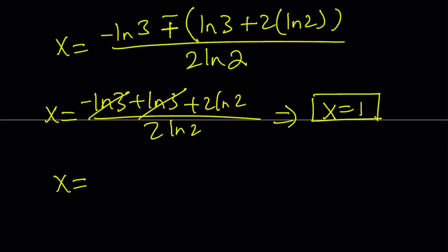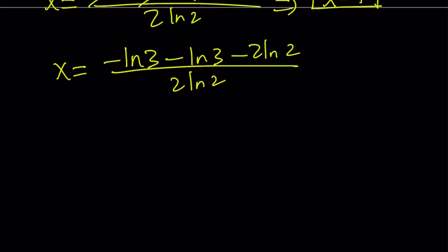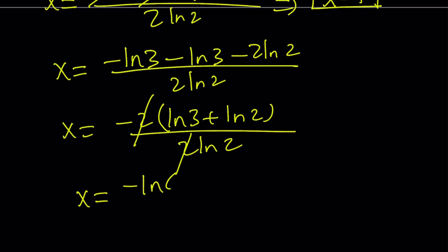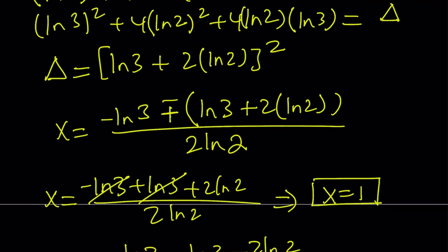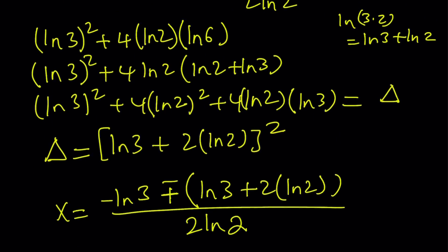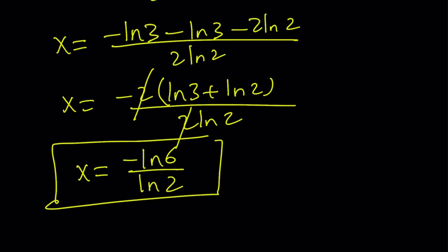The other solution uses the minus sign: (-ln3 - ln3 - 2ln2) / 2ln2. This becomes -2(ln3 + ln2) / 2ln2. The 2 cancels out, leaving us with -(ln3 + ln2) / ln2. We can write this as -ln6 / ln2. So we have two solutions, and these are the solutions. Later I'm going to show you a graph so you can see the solutions visually.